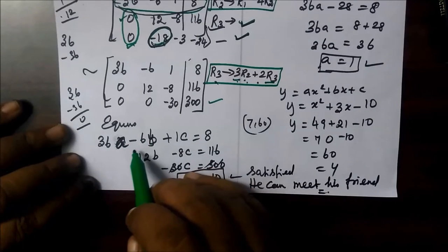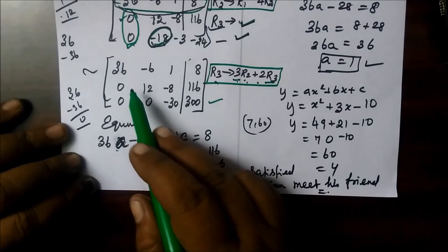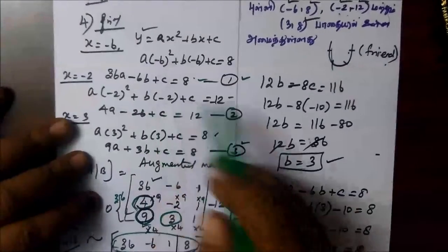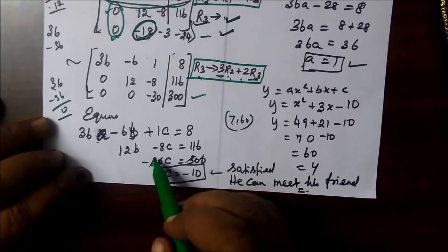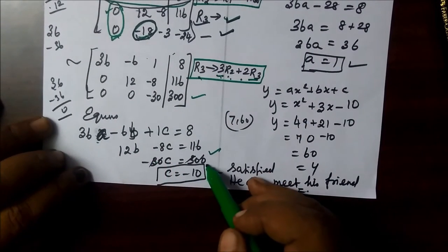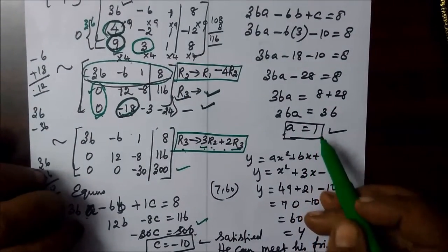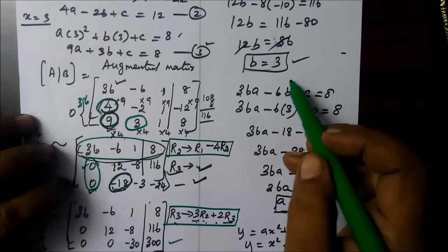So now we have the equation. 36A is being a, b, c. So instead of x, y, z you are taking a, b, c. In the third equation form, you are finding the C value, then A, then B value.